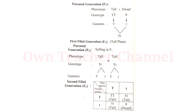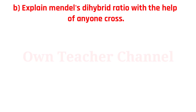Gene capital T is responsible for tallness and small t is responsible for dwarfness. When F1 hybrids are self-fertilized, they produce a second filial generation. In F2 generation, both tall and dwarf plants appeared in the ratio of 3:1. Thus the phenotypic ratio of F2 generation is three tall to one dwarf.